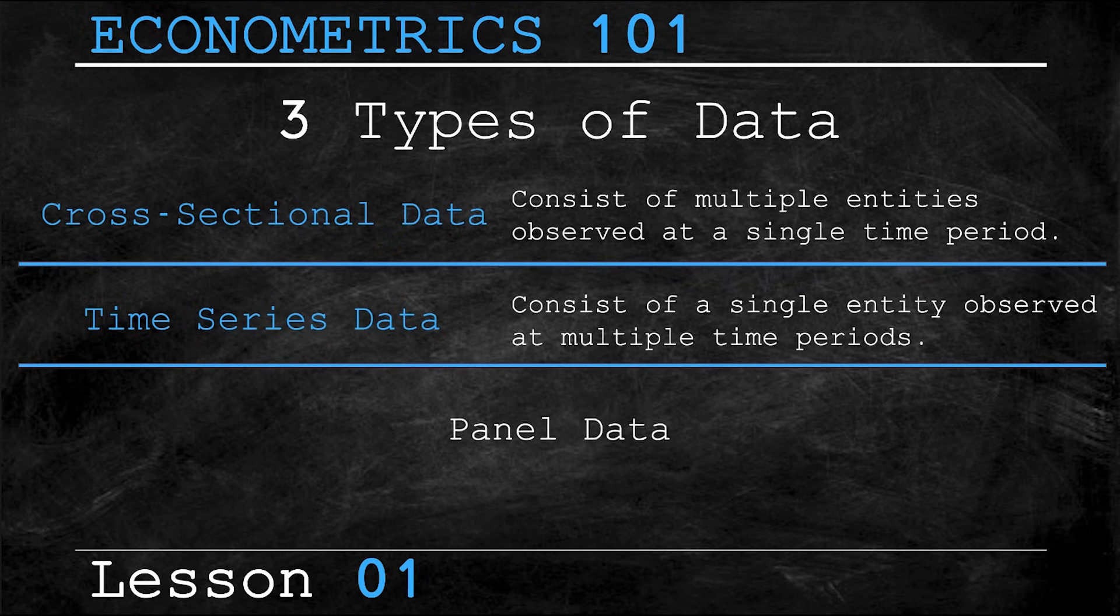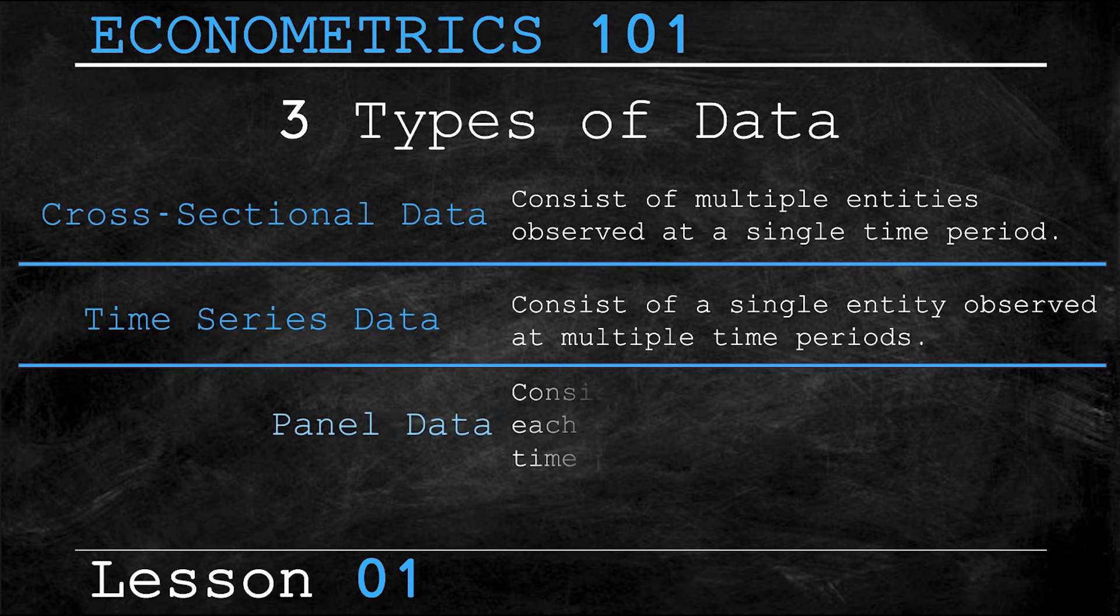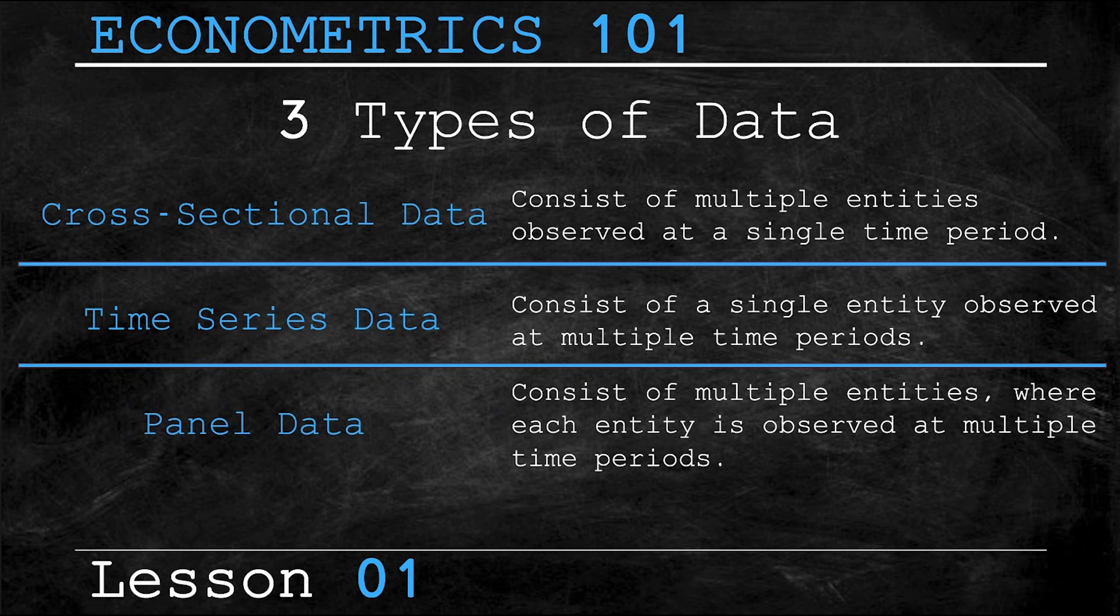Lastly, we have panel data, which is commonly referred to as longitudinal data, and this data consists of multiple entities where each entity is observed at multiple time periods. A simple example of this data is the annual GDP of Canada, the United States, and Mexico over the course of 2012 to 2022. In this example, there were multiple entities, that is the three countries, and there were also multiple time periods, in this case each of the years in this 10 year span between 2012 and 2022.